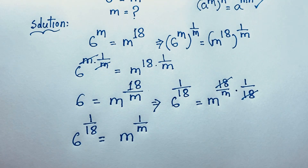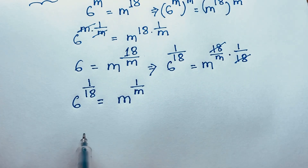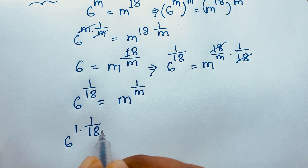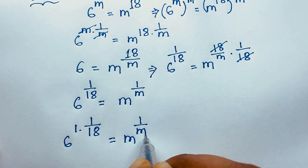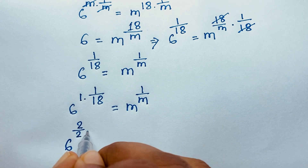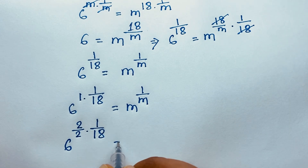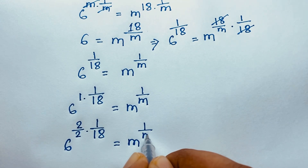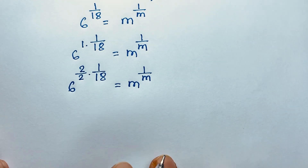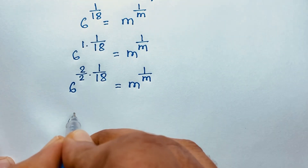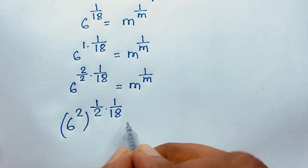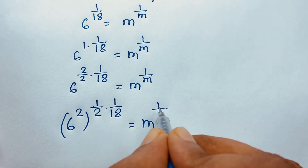Now at this moment, you can see that 6 to the power 1 times 1 over 18 is equal to m to the power 1 over m. I rewrite 1 as 2 over 2, so it becomes 6 to the power 2 over 2 times 1 over 18, which is 1 over 2 times 1 over 18, equal to m to the power 1 over m. I solve this question step by step. Then I take the 2 outside the bracket: 6 to the power 2, bracket, to the power 1 over 2 times 1 over 18, equal to m to the power 1 over m.